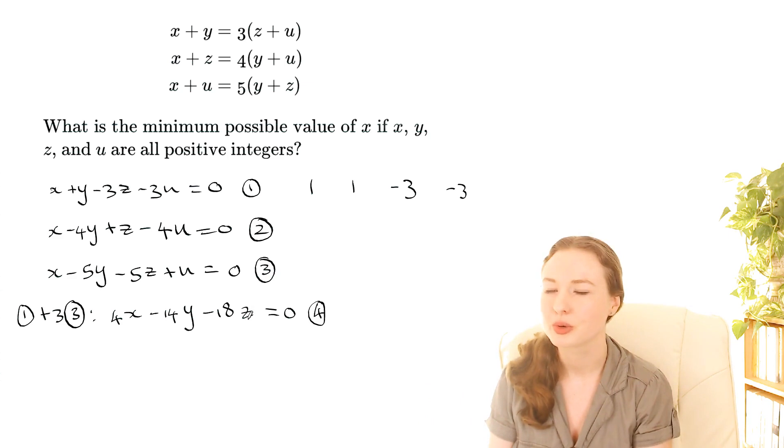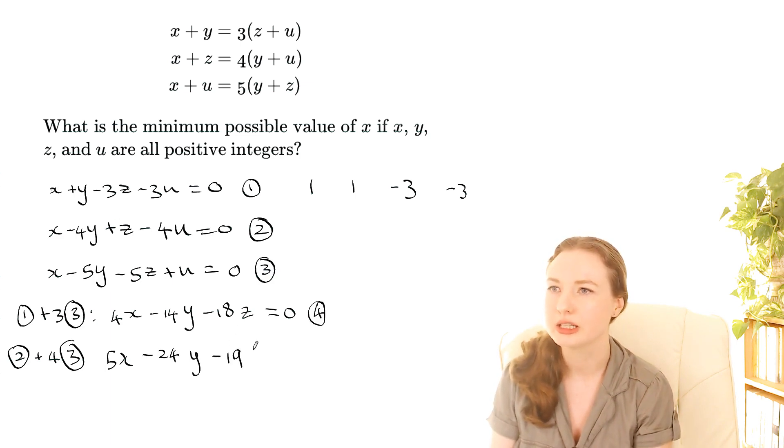Okay so that's equation 4, we've gotten rid of the u. Let's do the same thing with this equation so I'm going to take equation 2 and add 4 times equation 3 because that's going to get rid of the u's. So we've got that plus 4 so that's 5x, negative 4 minus 20, negative 24y, and then we'll have 1 minus 20, negative 19z, and then the u's will cancel and get 0. Let's call that equation 5.